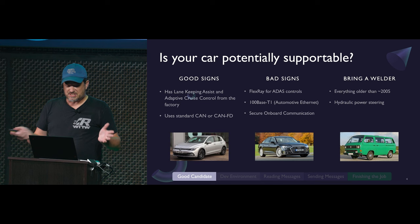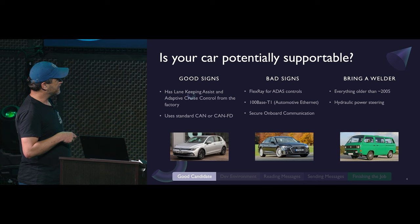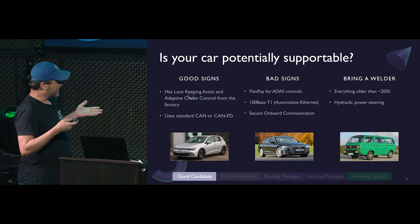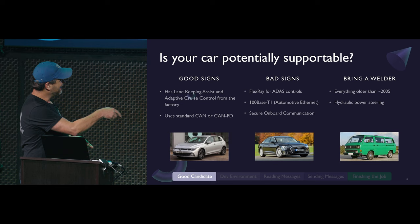If your car doesn't have any of this stuff, you might actually have an easier time. There's some folks that actually bolted an electric power steering rack, a bunch of microcontrollers, and some other things into a late-70s Volkswagen Vanagon. After that was done, that Vanagon kind of identifies as a Toyota Corolla, but it works. So in some ways, that car on the right is actually easier than the car in the middle.